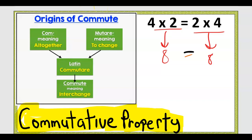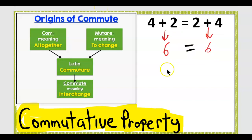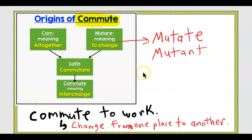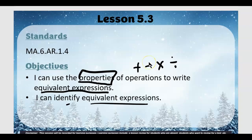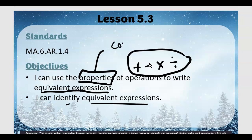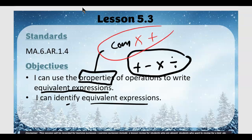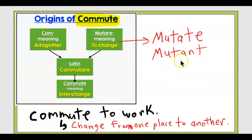Going back to the objective: commutative is one of the properties, and it works for multiplication and addition. That's what commutative property works for.